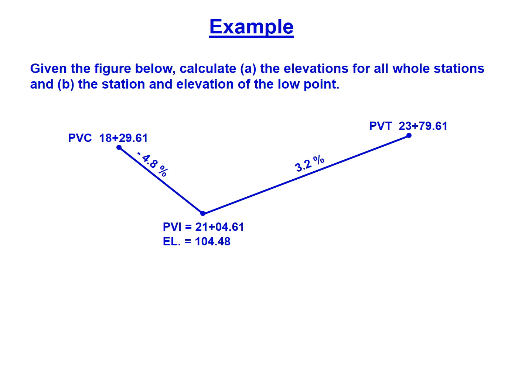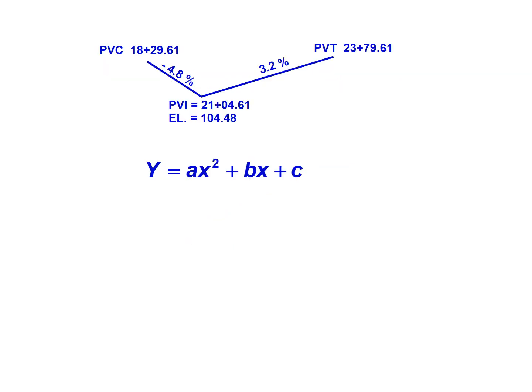In this video we'll work an example problem of a vertical curve. We're presented with a given figure and asked to calculate the elevations for all whole stations and the station and elevation of the low point. With the given information, we need to take that information and turn it into our parabolic equation specific to this vertical curve.